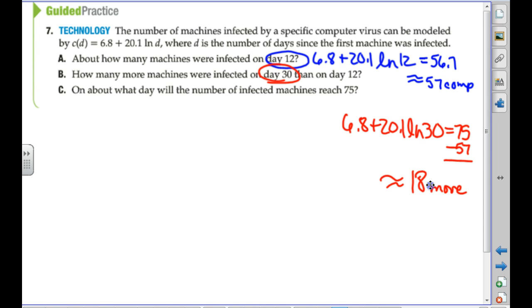So it's 6.8 plus 20.1 L-N of 30, and you got what, 75? So if we subtract the 57, we're at 18? About 18 more? Is this computer virus going crazy? Yeah, it says, on what day would it reach 75? On what day would it reach 75? Well, we already figured that out. It was day 30, right?